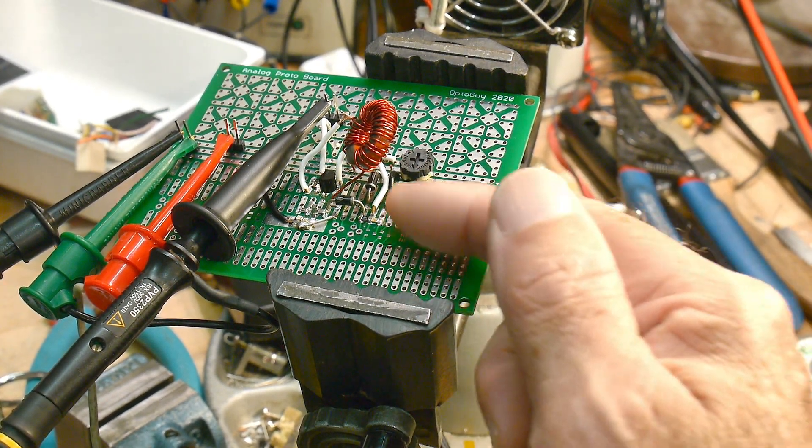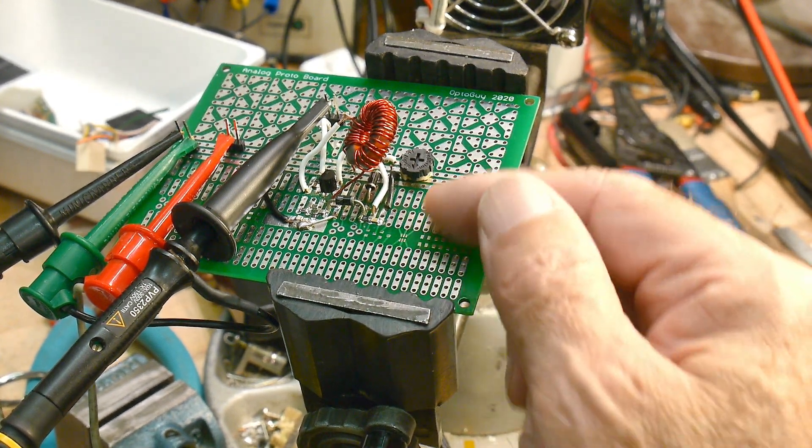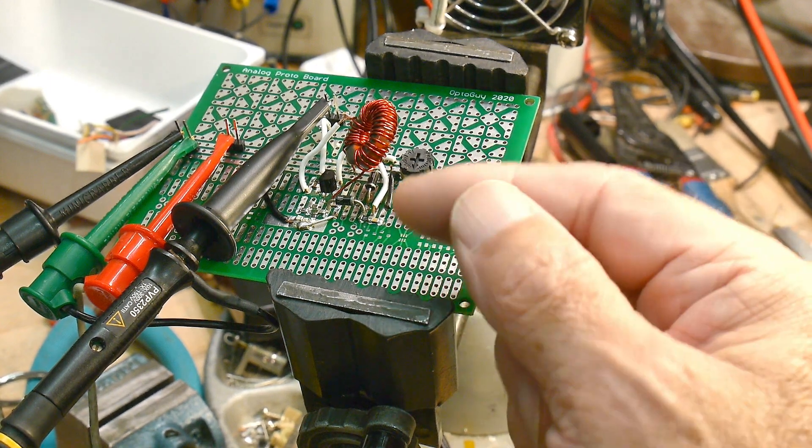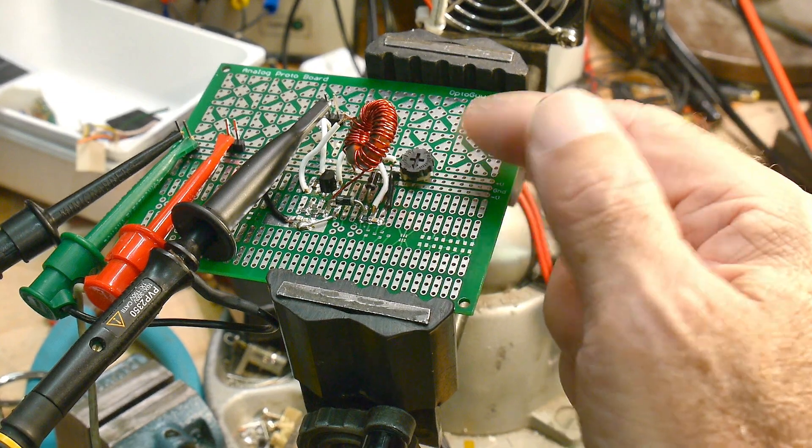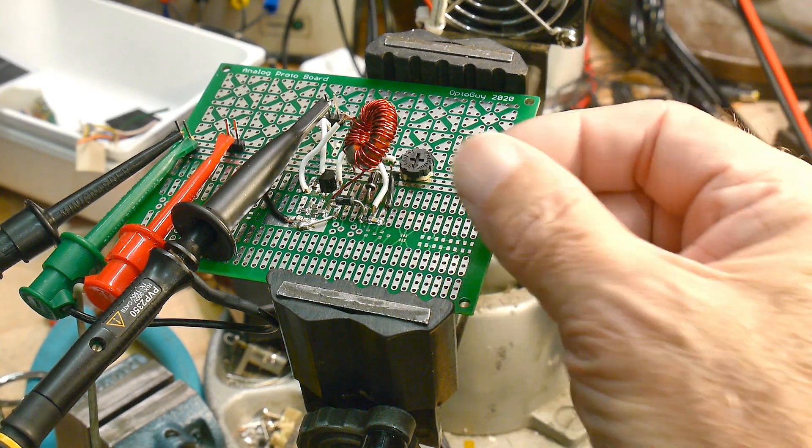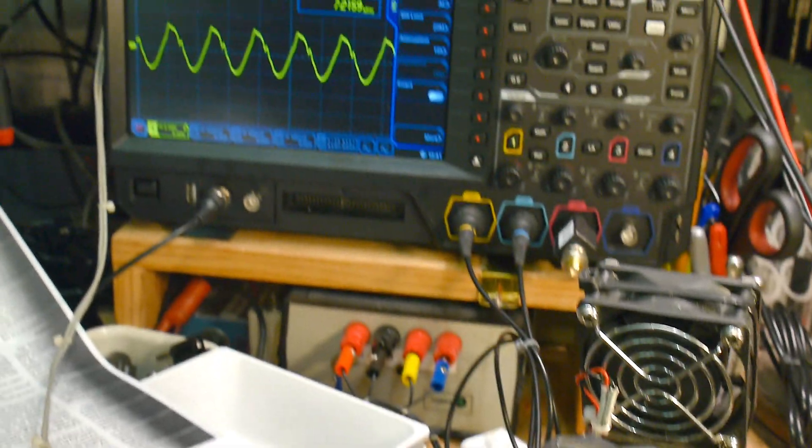The voltage range on the varactor diode should be like zero to two volts or zero to one volts, something like that. And I have the potentiometer across zero to 12 volts, so I have to touch it just a little bit to make it change. But it's working.